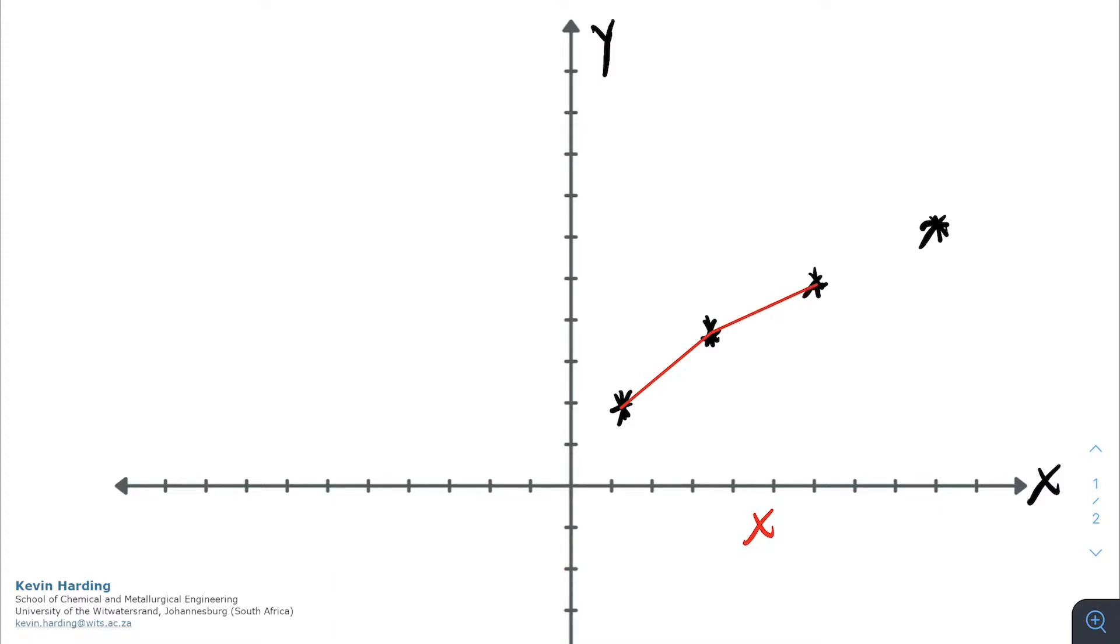Linear interpolation where we simply connect each point by a linear line is one of the easier forms of interpolation and the one that we're going to look at today.